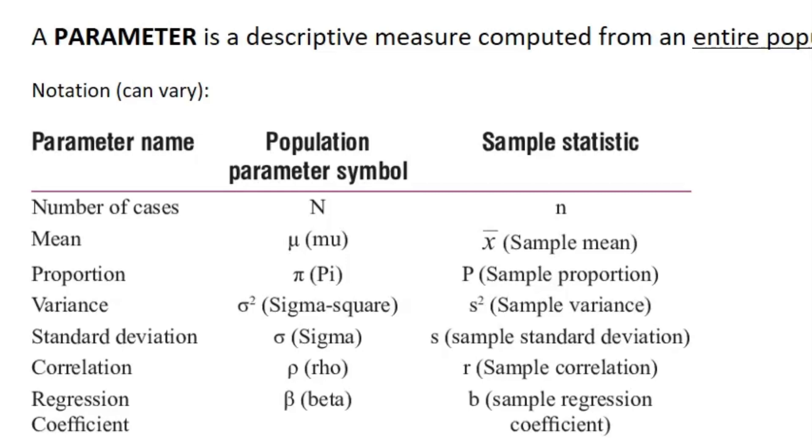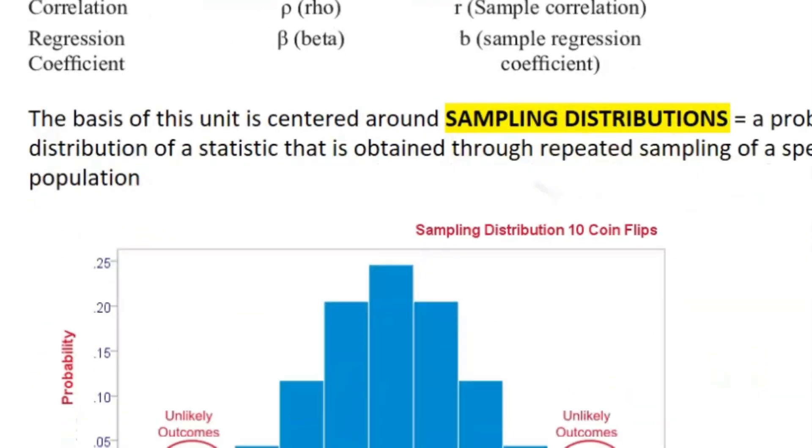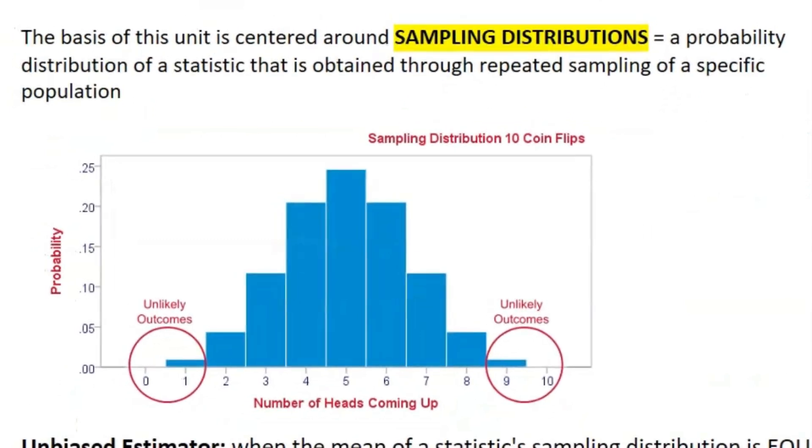But there are other ones, like slope and chi-square. There's a unit on that. What we need to know right now is what exactly is a sampling distribution? It's a probability distribution of a statistic that is obtained through repeated sampling of a specific population.